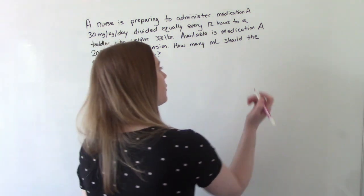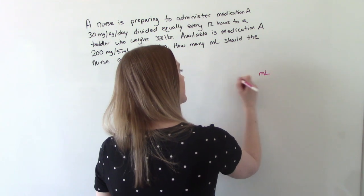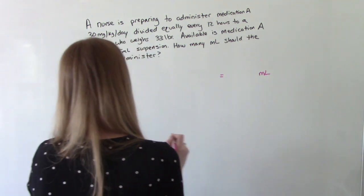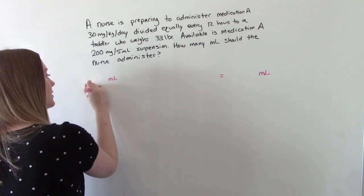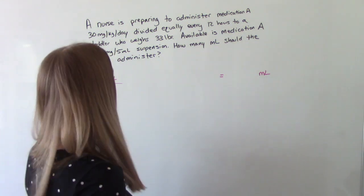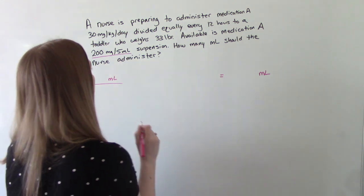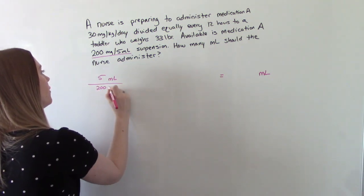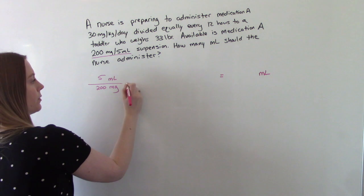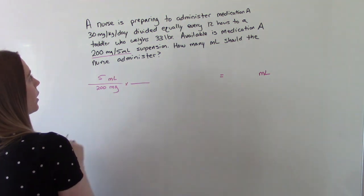So we're looking for ml's, so that's going to be in our answer, and if it's going to be in our answer, it needs to be in our numerator. So where do we see that here? 200 milligrams is the equivalent of 5 ml's.